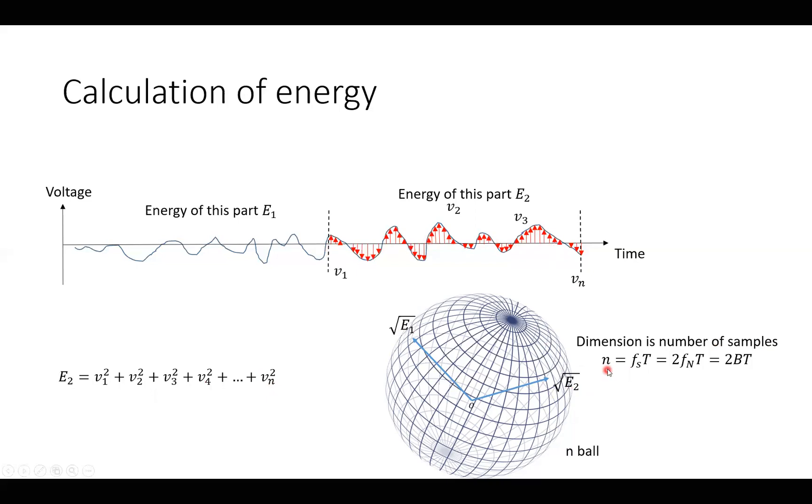So the number of samples is the frequency of the samples and the time we have measured. And that is two times the Nyquist frequency multiplied by the time, which is two times the bandwidth multiplied with time. So that is the dimension of our ball.